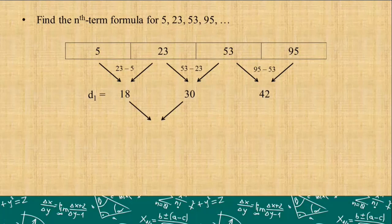We have 30 minus 18, which is 12. That's d₂. And finally, we have 42 minus 30, which is also 12. As you can see, d₂ is equal. Both are 12. What if they are still different? What if one is 12 and the other is 13? Then we need to continue subtracting, and that will be d₃. Keep doing this until the differences become equal.